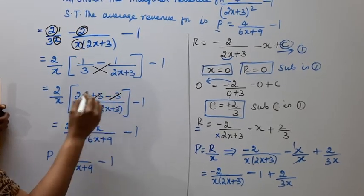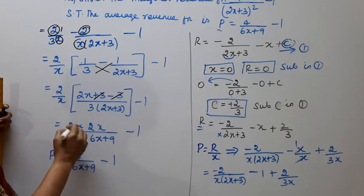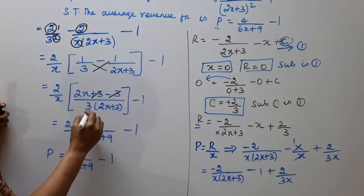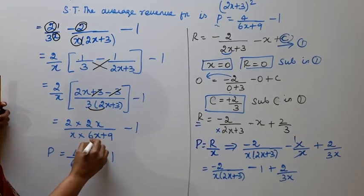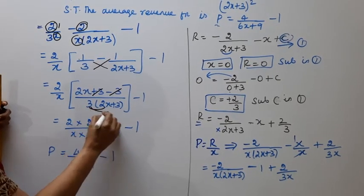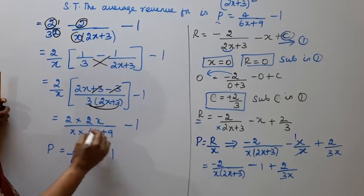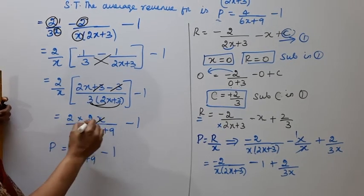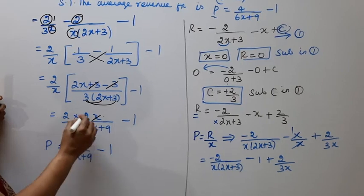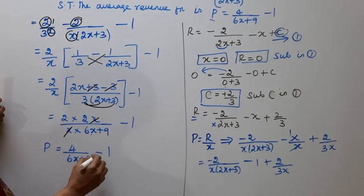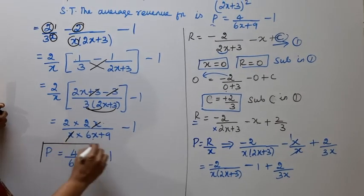The 3 in 2x+3 minus 3 cancels. We get 2 by x into 2x divided by 6x, which is 6x, plus 9. Cancel x from numerator and denominator: 2 divided by 2 is 4/(6x+9) - 1.